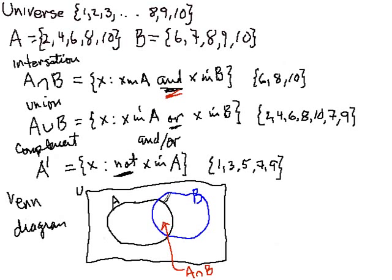And we already calculated what that was. That was going to be the elements 6, 8, and 10. So these three elements are in the intersection.